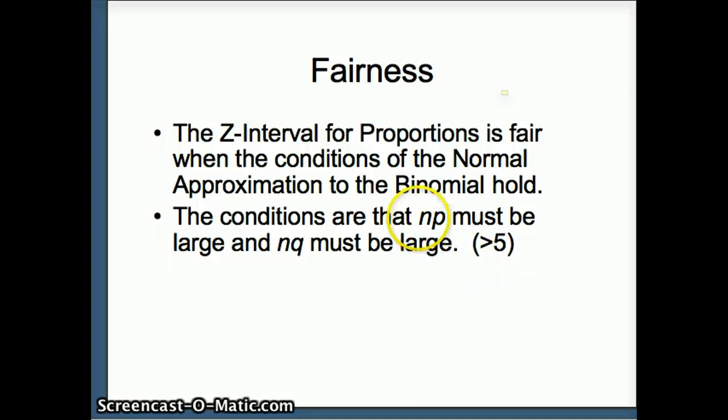In that case we wanted np to be large and nq to be large. N was the number of trials and p was the probability of success, so in a sense np is the number of successes.